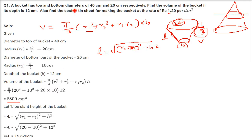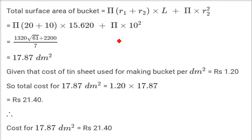So: (20 − 10)² + 12² = 100 + 144. Taking the square root, the slant height comes as 15.62. The formula for total surface area is: π(r1 + r2)·L + π·r1·r2·L + π·r2².